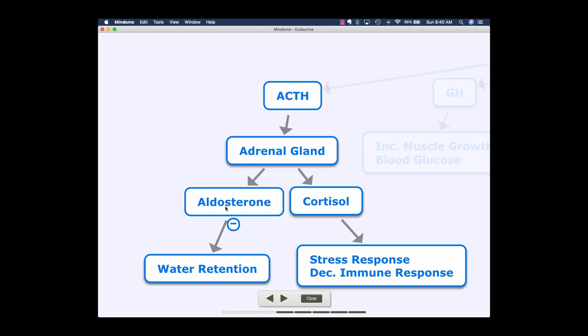Aldosterone is going to work with the renal system to regulate water — so regulate our level of hydration. Specifically, aldosterone is going to help us increase water retention. Cortisol works very differently. Cortisol is largely associated with our stress response. When we're stressed, we're going to see things happen in the body like an increase in glucose concentration in the blood, so that we have glucose available to our tissues to run faster away from a threat, so that our heart can beat harder, our brain can work harder.